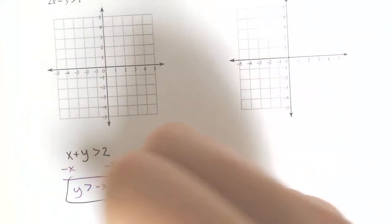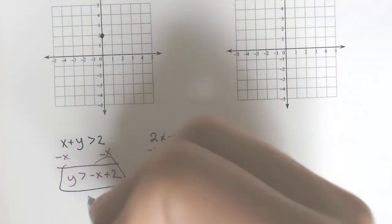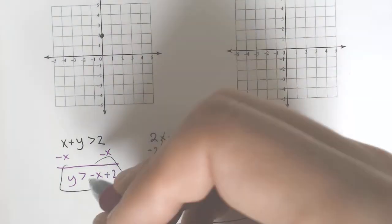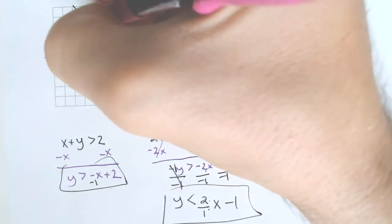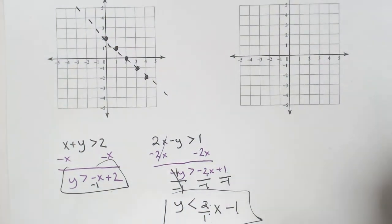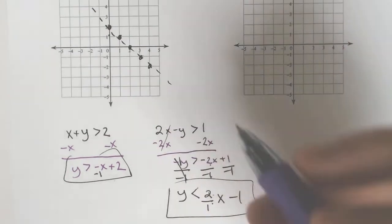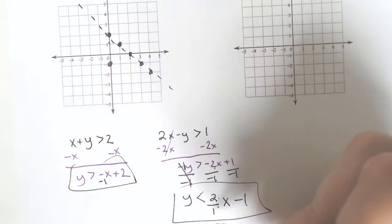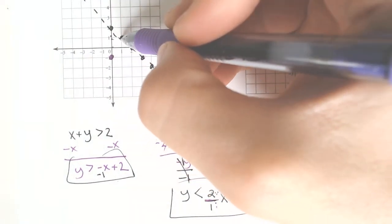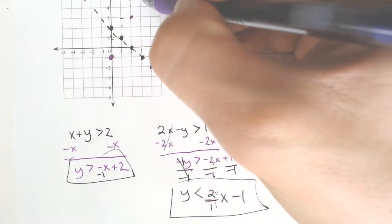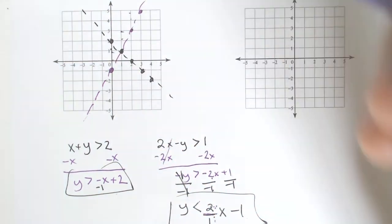So I'm going to graph both of these. Starting with negative x plus 2: it has a y-intercept of positive 2 and a slope of negative 1, so down 1, right by 1. This one would need to be a dashed or dotted line, so make sure you're not filling it in. Then the next one — the last one — is a y-intercept of negative 1 and a slope of positive 2 over 1, which is why I like keeping it as a fraction so you know it's up by 2, over by 1. Up by 2, over by 1. And again, it is a dashed line.